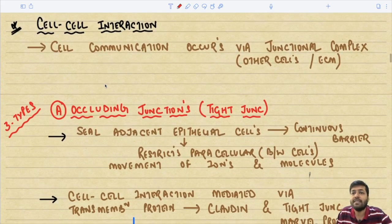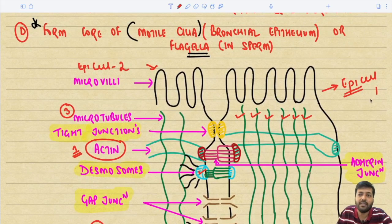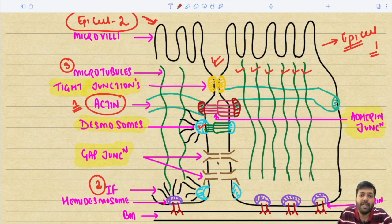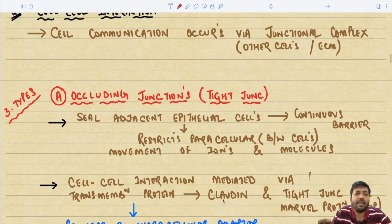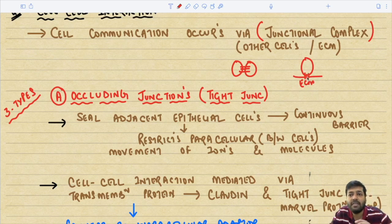Cell-to-cell interactions occur via junctional complexes. Communication can be between two cells or between a cell and the extracellular matrix. There are three important types of cell communication junctions, which we will now cover in detail.